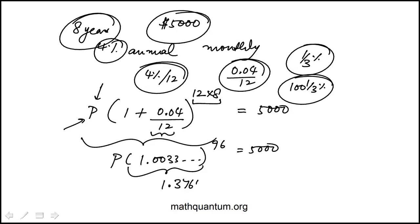And if we divide 5,000 by that, we get P to be 3,632. If you look at the answer choices, that's closest to 3,650, which is choice D.